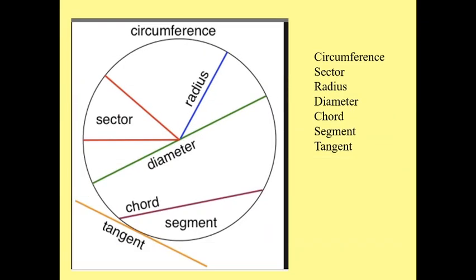So the answers are right here. The only thing you really need to notice is that your chord goes from one side of the circle to the other. By that logic, the diameter is also a chord but it's a special type of chord.